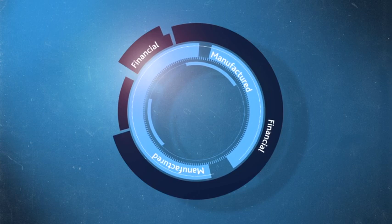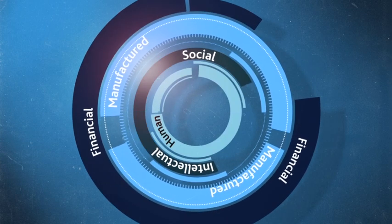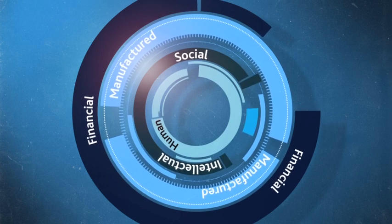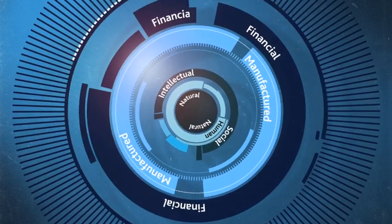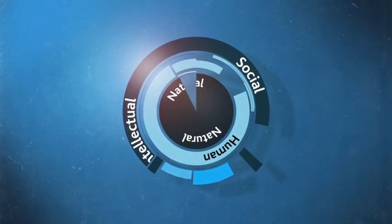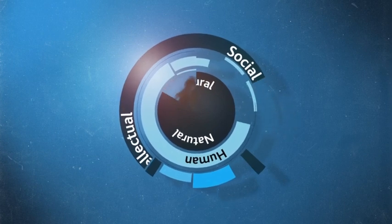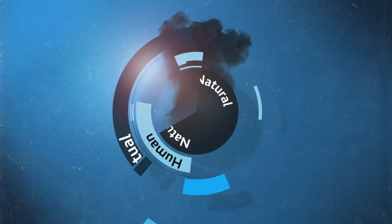Manufactured and financial capital stocks are products of and dependent on human, social and intellectual capital stocks, which in turn are products of and dependent on natural capital. If we build our financial and manufactured capital stocks at the expense of human, social, intellectual and natural capital, we deplete our resource base, leading to imbalance and eventual crisis.